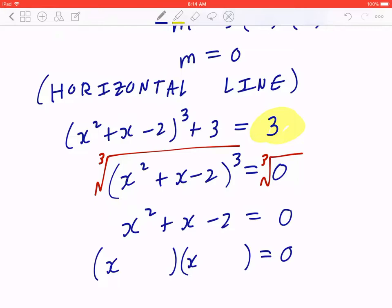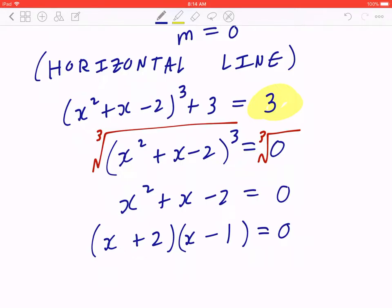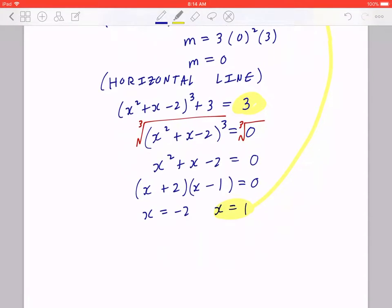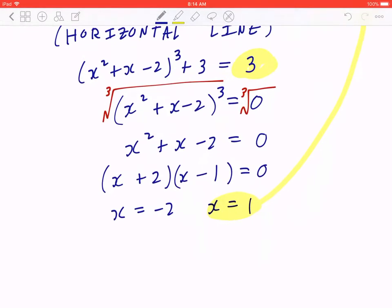x² becomes x times x. The factors of 2 that will give you a sum of 1 is going to be (x + 2)(x - 1). And as expected, x = -2, x = 1. The fact that we found one of the answers, (1, 3), was not a surprise. But the more important part is this, x = -2.